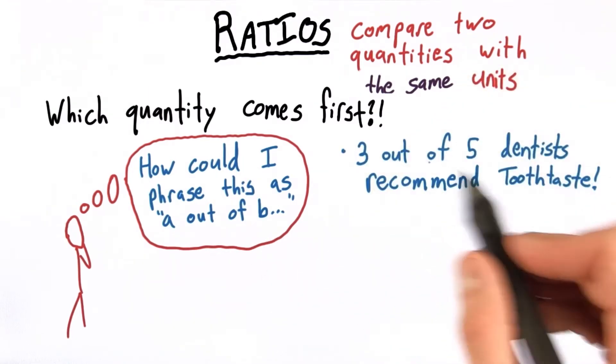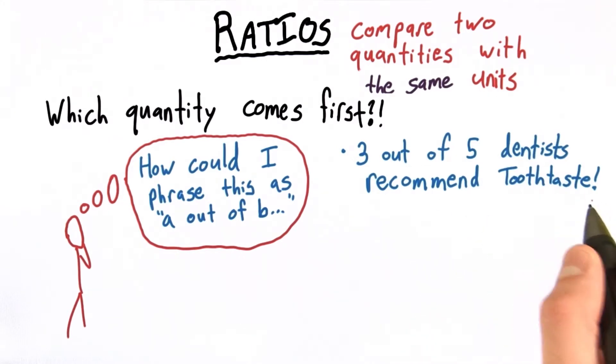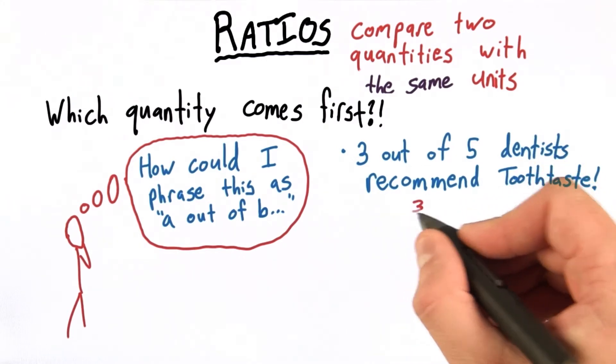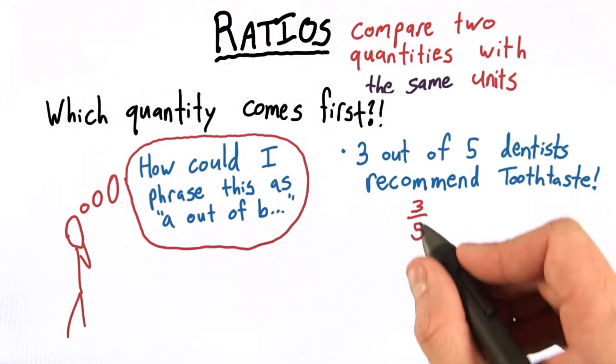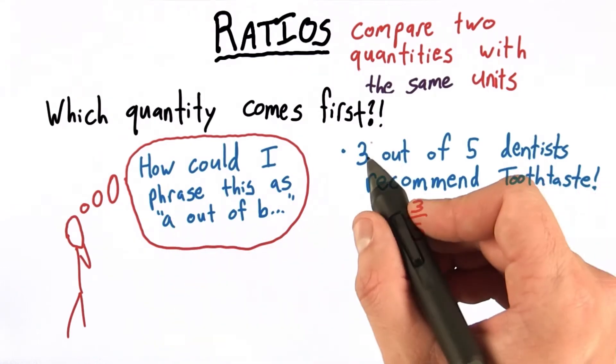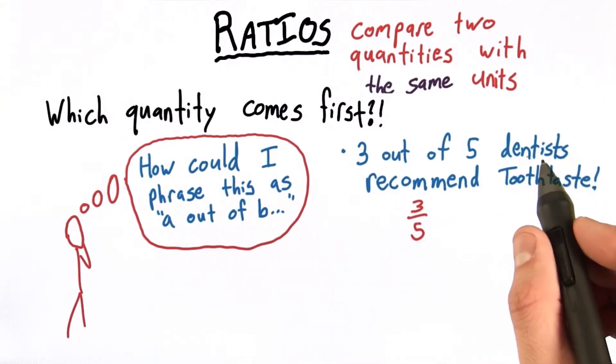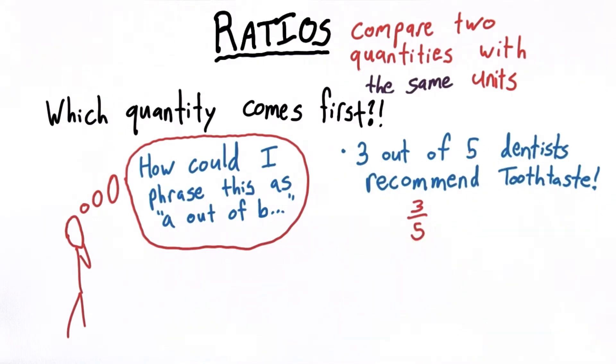When we had the statement, 3 out of 5 dentists recommend tooth taste, the tasty toothpaste, our ratio was 3 out of 5, 3 over 5. In this case, 3 dentists was my A and 5 dentists was my B. Or we could think of it as 3 was my A and 5 was my B.